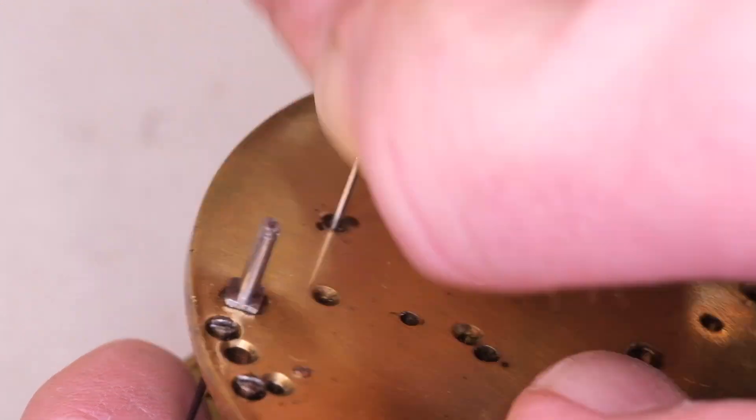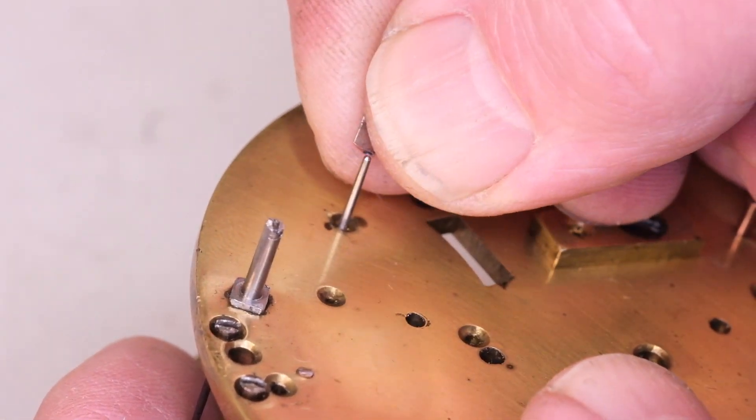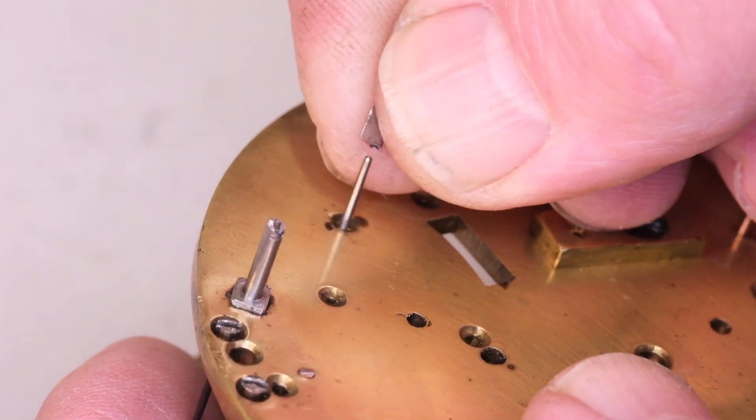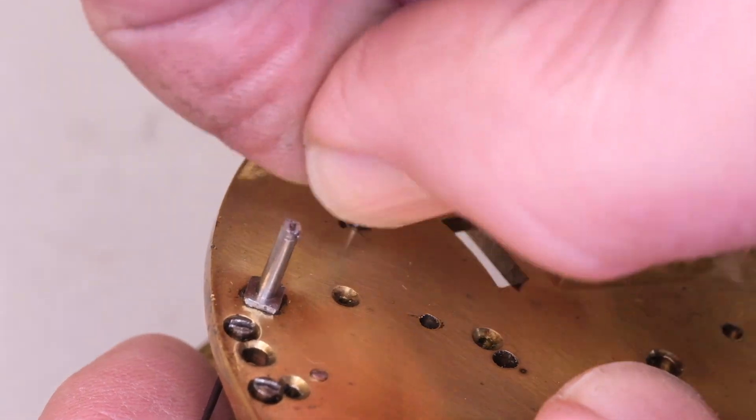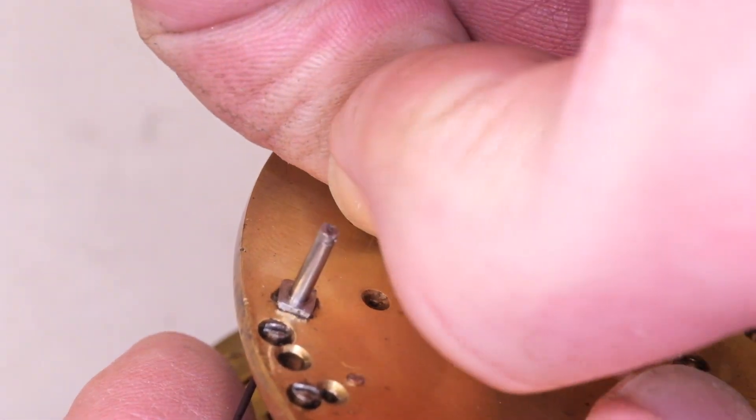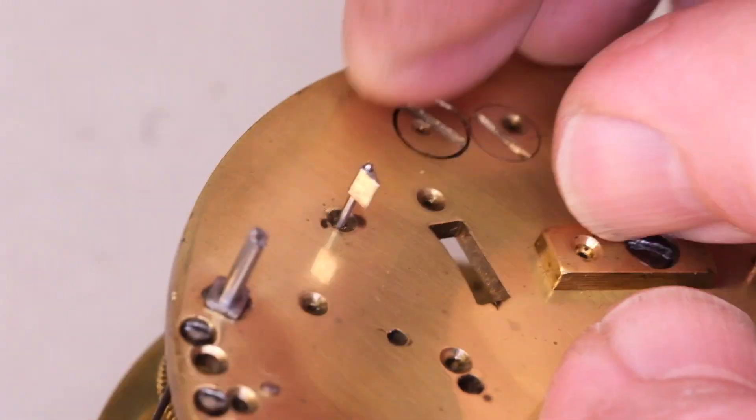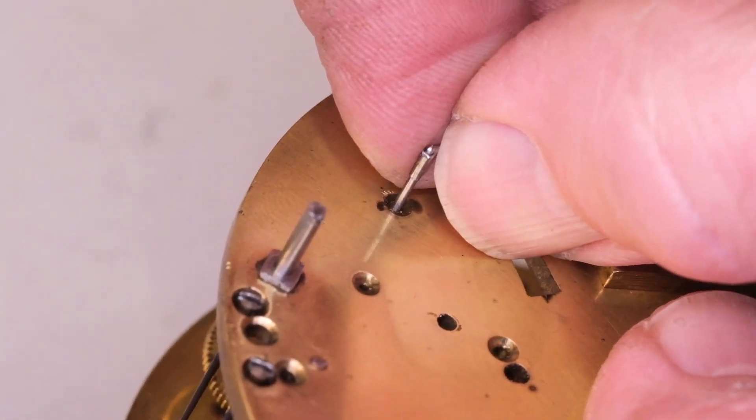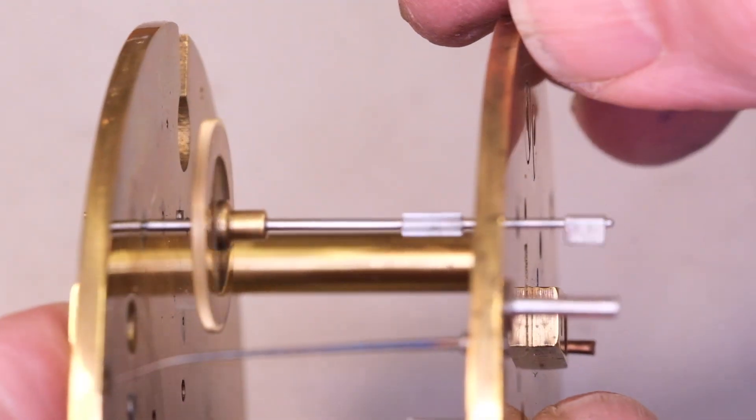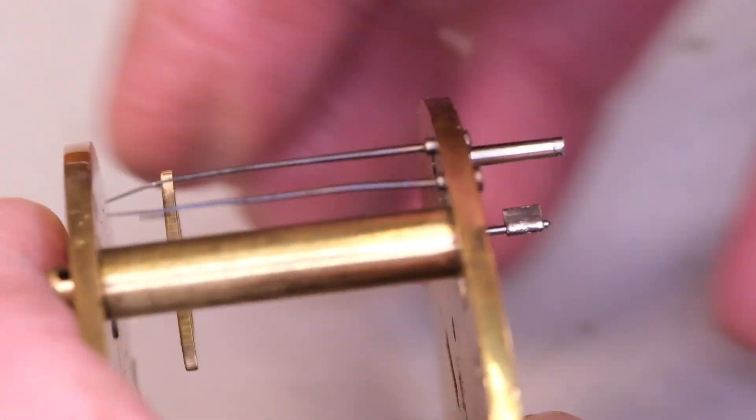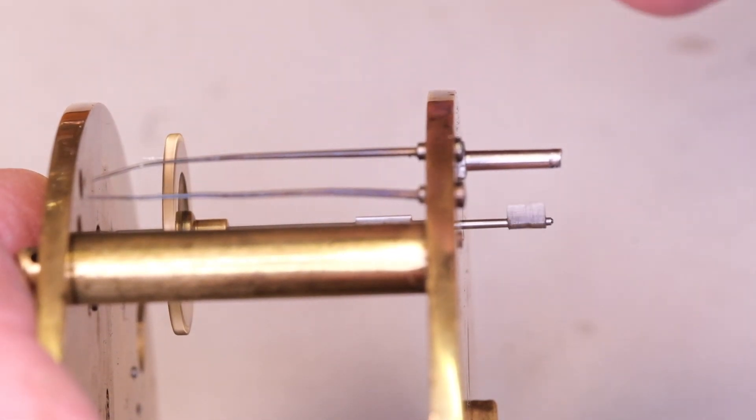If you get to the point where the gathering pallet won't come off a clock like this, then the thing to do is to take all the other mobiles out and gently tap the arbor through the gathering pallet against the plate or against a pair of brush tweezers. Please don't try and lever the pallet off, you are likely to break the arbor.